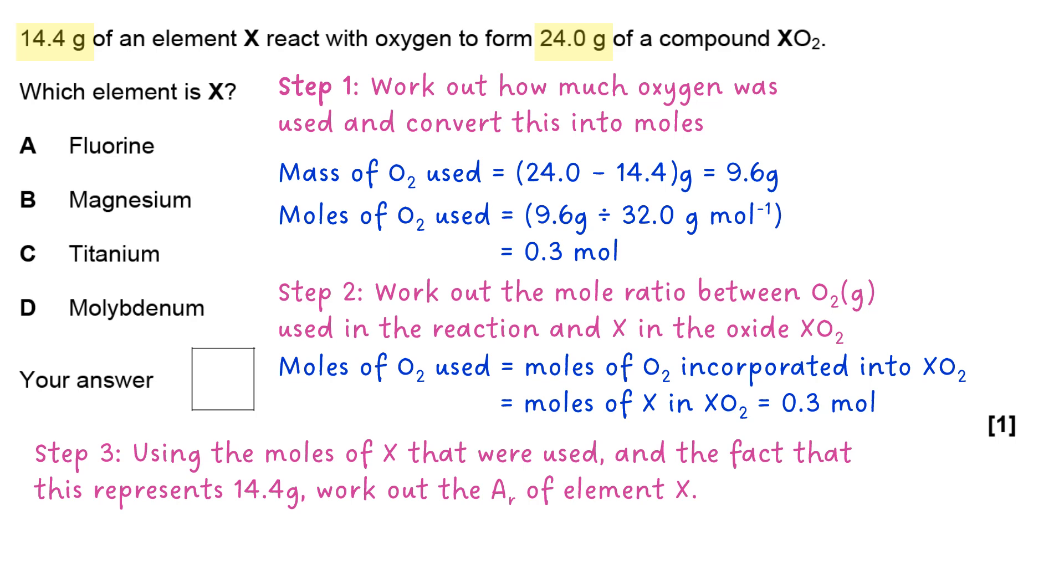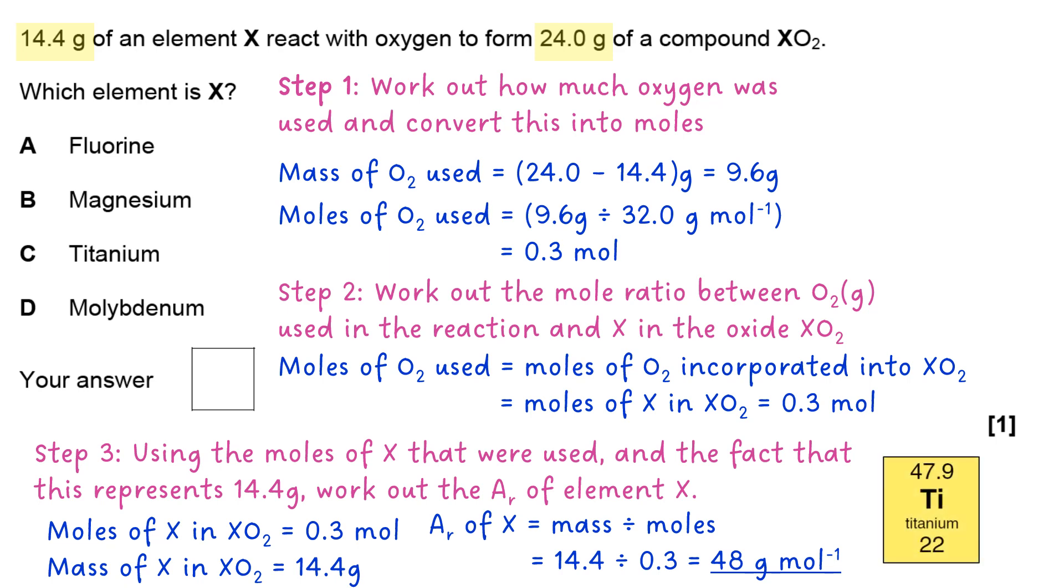So using this and the fact that this represents 14.4 grams, you can work out the relative atomic mass of element X. The relative atomic mass of element X must be 48 grams per mole. From the choices we have, looking at the periodic table, this most closely matches titanium, so it's answer C. Thanks for listening, until next time, see you soon.